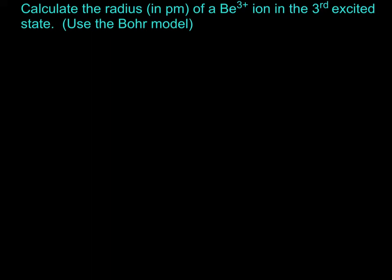First, let's remind ourselves what equation we're talking about. The radius of any one-electron atom or ion at a given n level is equal to n squared times a₀, which is the Bohr radius, divided by Z, the atomic number. This is the radius at whatever n that is - the radius of the orbit.